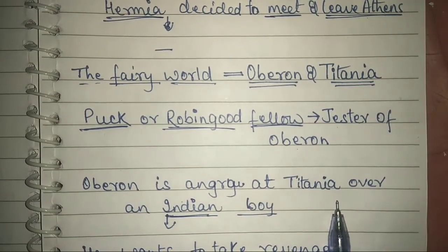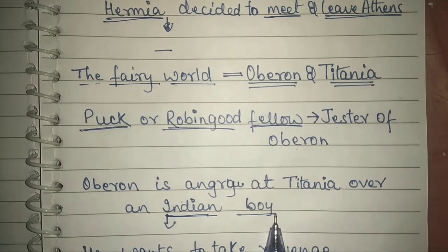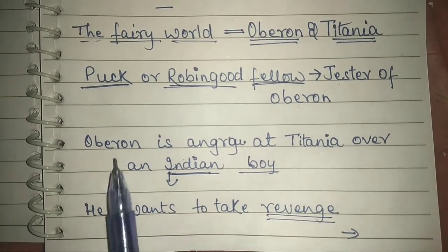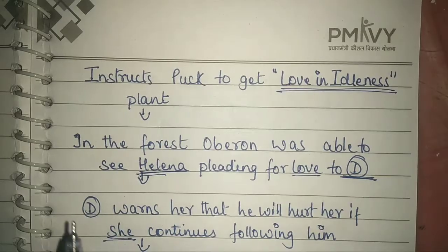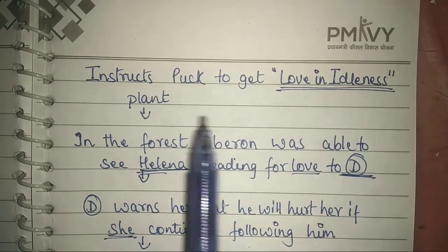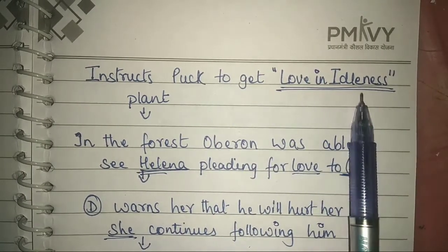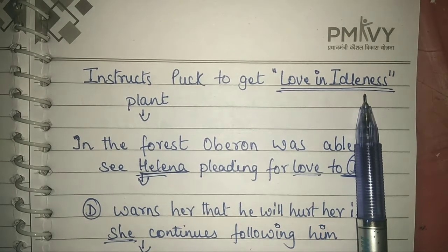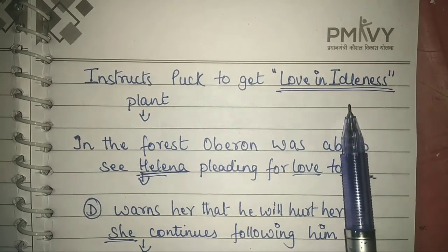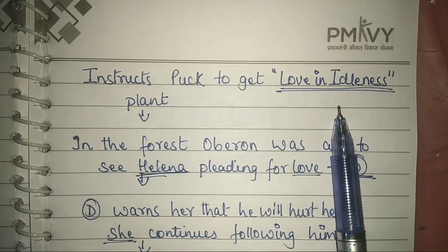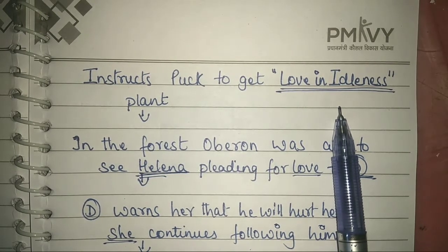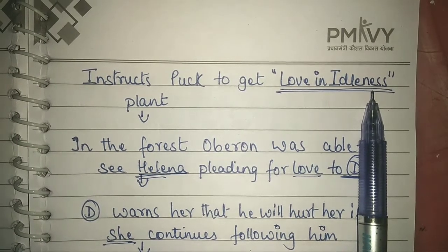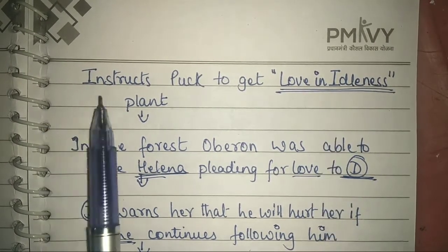Oberon is angry at Titania, his queen, because Titania was nurturing an Indian boy, and Oberon wanted this boy, which Titania refused. He wanted to take revenge upon Titania for this act. He instructs Puck to get the love-in-idleness plant. This plant is very important because if a few drops of the love-in-idleness juice are put into the eyes of a person, he or she will start loving the first person they see after opening their eyes — they will love them wholeheartedly. This was the plant which Oberon asked Puck to get for him.